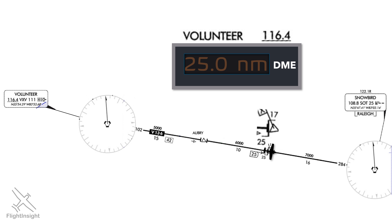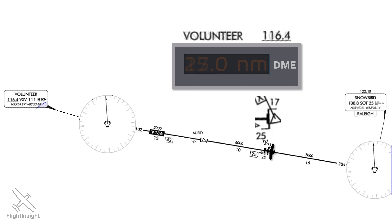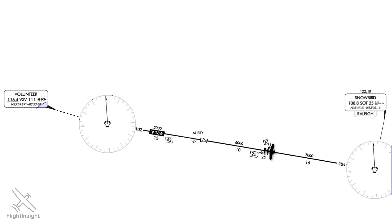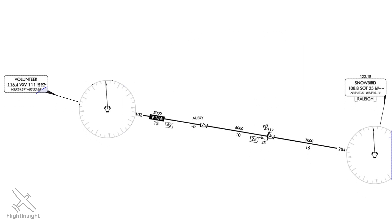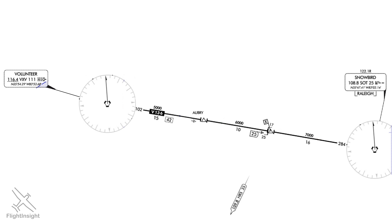The line connecting them is called a Victor airway. This is Victor 136 — the V stands for VORs, since this airway is defined by the 102 radial from Volunteer and the 284 radial from Snowbird. The numbers 15, 10, and 16 are segment lengths along the airway. If we add up all the segment lengths, we get the total mileage between the VORs, which is shown in the box as 42, rounded to the nearest mile.